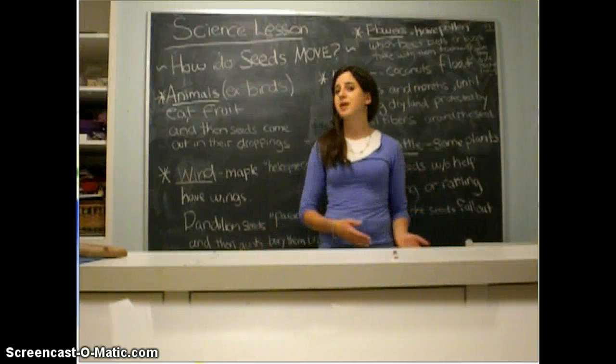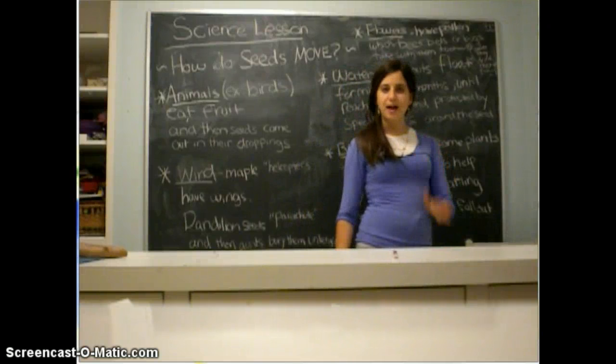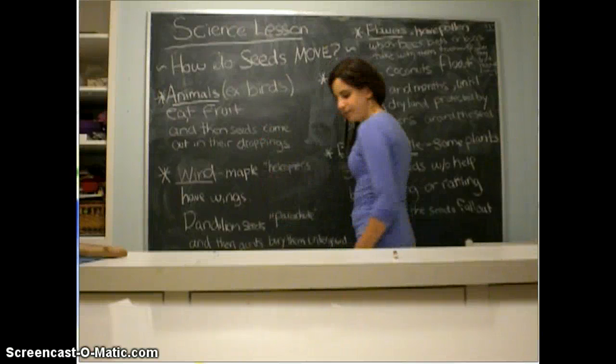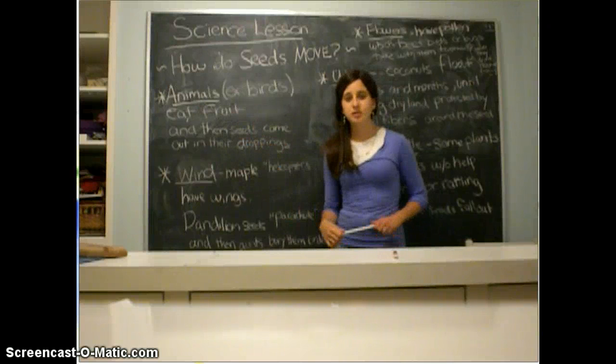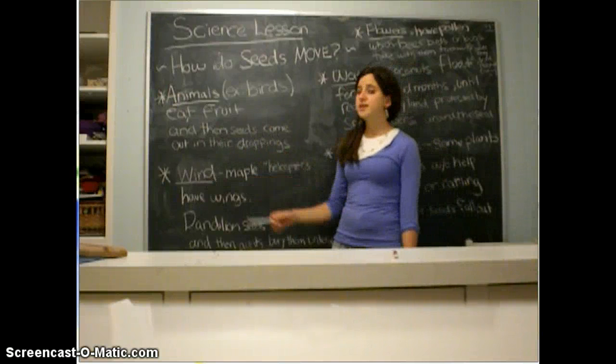I'm going to show that I have my categories sorted according to how seeds travel. So let's look over here — how do the seeds move? Seeds move by animals. For example, birds eat the fruit and then seeds come out in their bodies. The wind is another way for seeds to move.